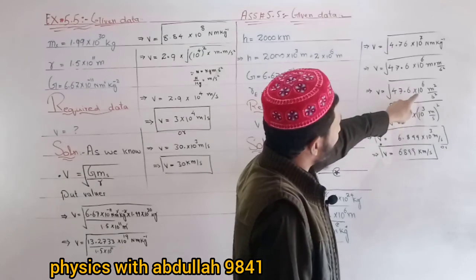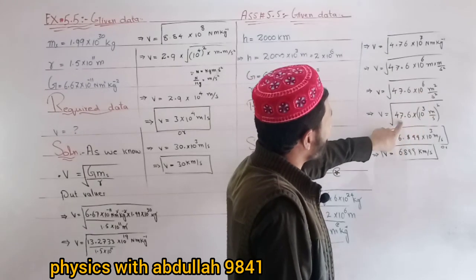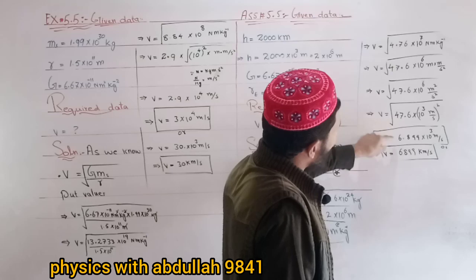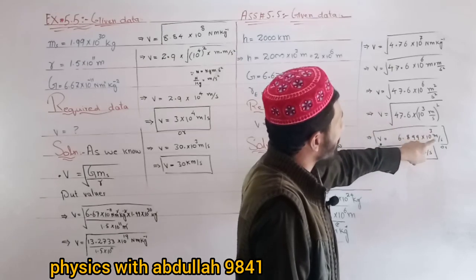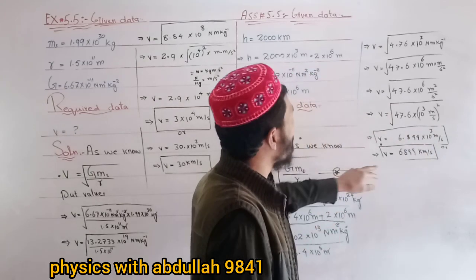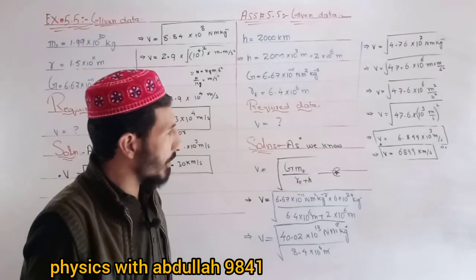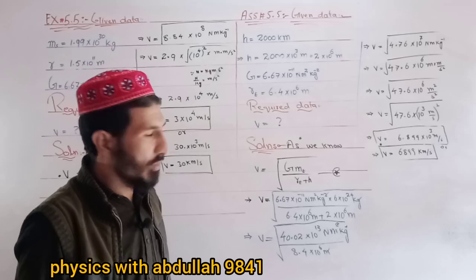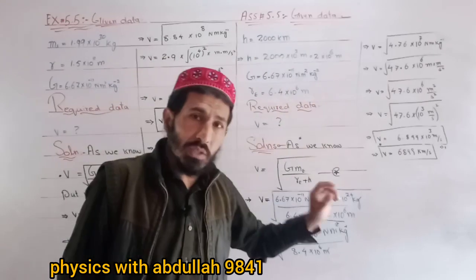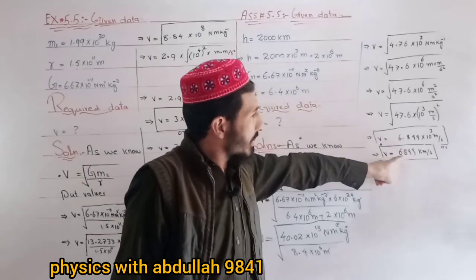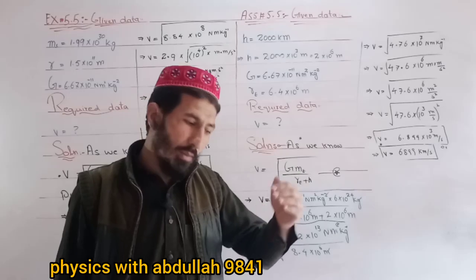The result is approximately 7.8 × 10^3 meters per second. This corresponds to around 7.8 km/s as the required orbital speed for the satellite at 200 km altitude.